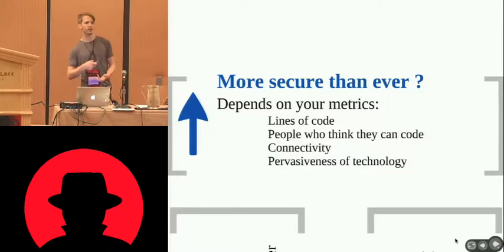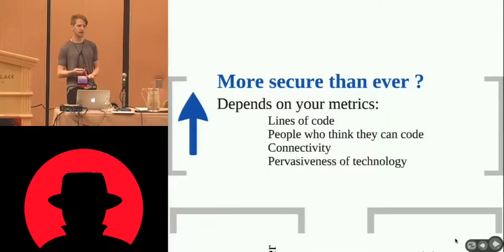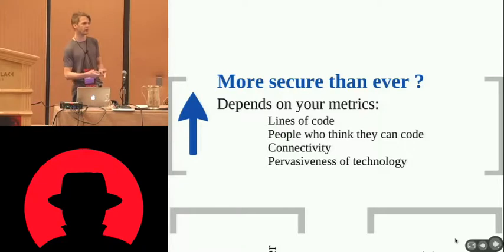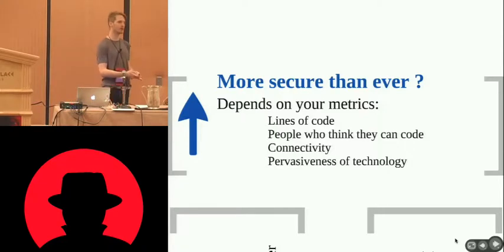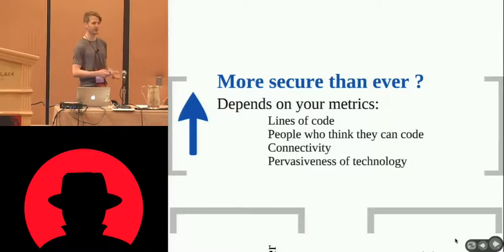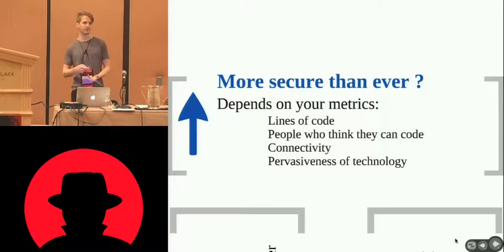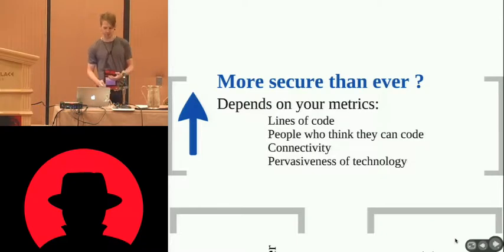There's a lot of talk about being more secure than ever, but it depends on the metrics. If you're looking at lines of code, there's more than ever. There are more people who think they can code, more people who release development code at companies while knowing nothing about security. Everything is a lot more connected, everything is Web 2.0, everything touches the cloud. So when people say we're winning the battle, when you look at the bigger picture, that might not be so true.